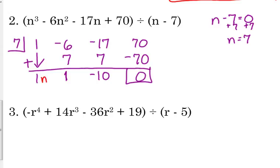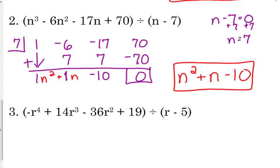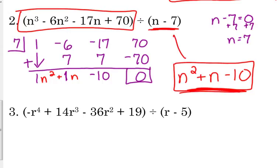So, that means our answer is n squared plus n minus 10. No remainder. So, that's it. So, that means that we could factor n cubed minus 6n squared minus 17n plus 70. It's n minus 7 times n squared plus n minus 10. If we multiplied that binomial right here and this trinomial right here, this would be the result. When we multiply these two terms right here, you would get that original polynomial.